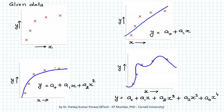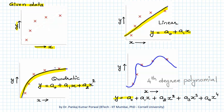For example, we have data plotted in a y versus x scatter diagram and we want to fit a regression model to this data. There are several regression models we can select: a linear regression model, a quadratic regression model, or an even more complex polynomial regression model — say a fourth degree polynomial regression model — which will be more complex than the linear and quadratic models.